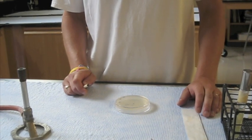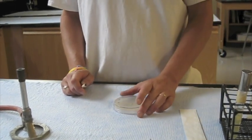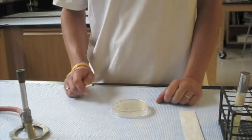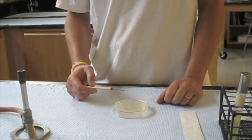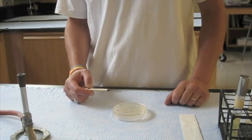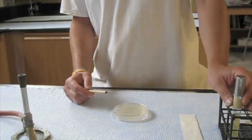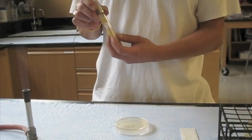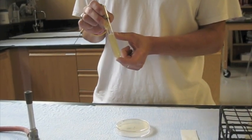In the next segment here, we're going to show you how to do what's known as a stab. We're going to take some bacteria off a plate that has been incubating in the incubator overnight and transfer them using an inoculating needle instead of a loop this time, into a tube of nutrient agar, which is known as a stab.